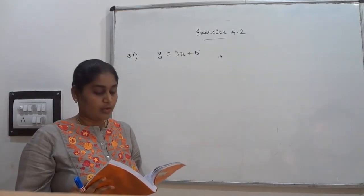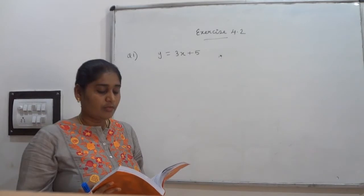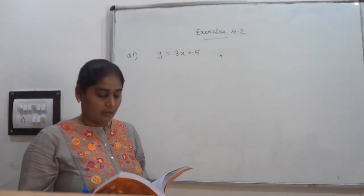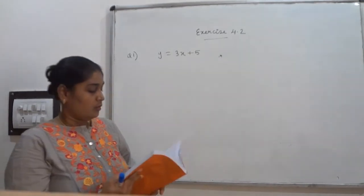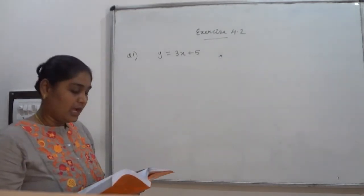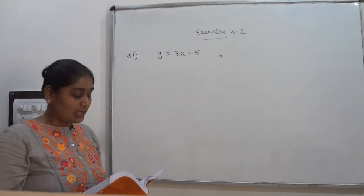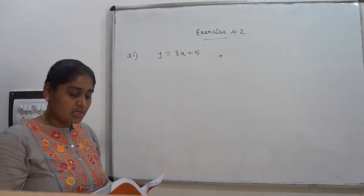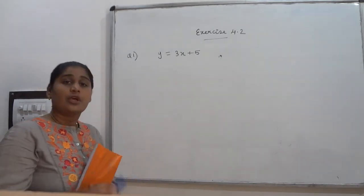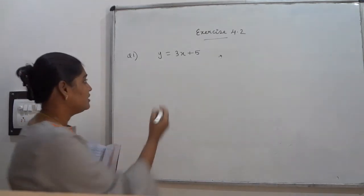Exercise 4.2, Question number 1: Which one of the following options is true and why? For y = 3x + 5 — the options are: unique solution, only 2 solutions, or infinitely many solutions. You have to find out the correct option.